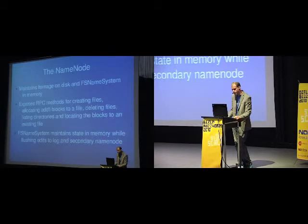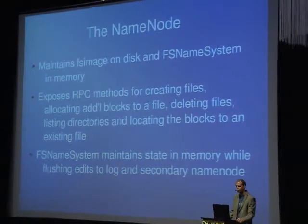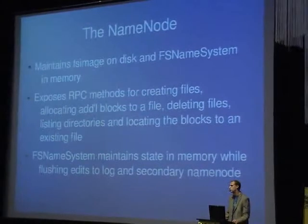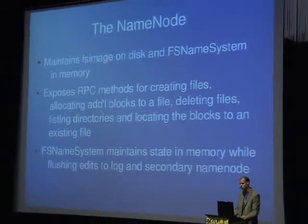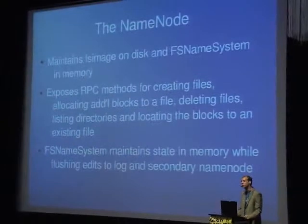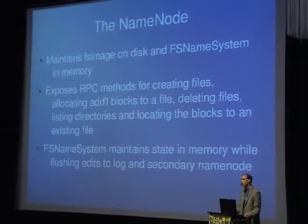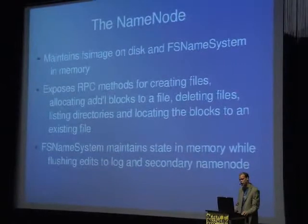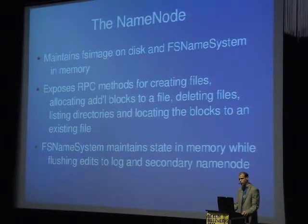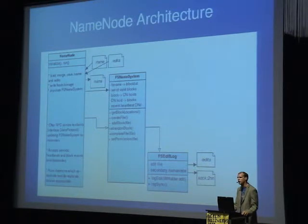The name node maintains one big data structure called the FS image when serialized to disk, and the FS name system when it's objects in memory. It exposes RPC methods — when you're opening a file for write or read, you talk to the name node first. It coordinates everything on the cluster. The most important data structure is the FS name-to-block list: a mapping of a path like /user/jfoo to the list of block IDs it contains, such as 12, 42, and 163.